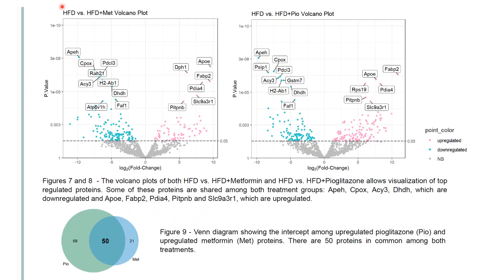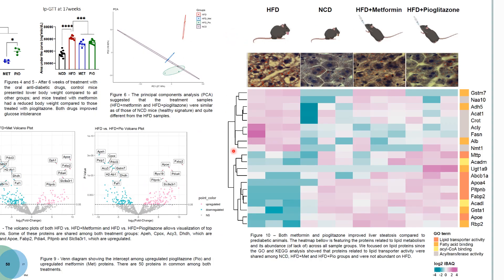Volcano plots of both the high-fat diet group versus the metformin-treated group, and the high-fat diet group versus the pioglitazone-treated group, allow visualization of top-regulated proteins. Some of these proteins are shared among both the metformin and pioglitazone groups, comprising similarities in down-regulated and up-regulated proteins. The Venn diagram shows 50 proteins that are shared among up-regulated pioglitazone and up-regulated metformin proteins. On the heatmap, we can see a column comprising three samples corresponding to each group. Seeing first the results from the liver histology, both metformin and pioglitazone improved liver histosis compared to pre-diabetic animals.